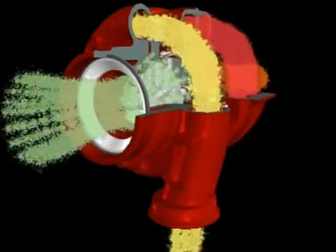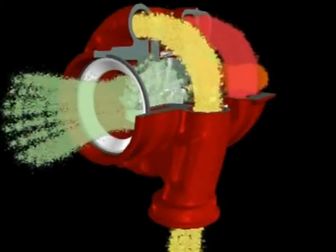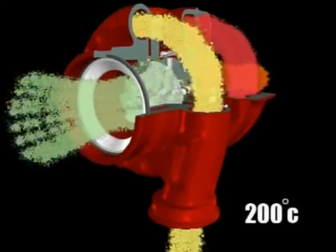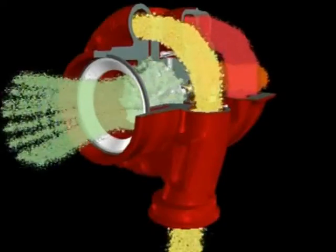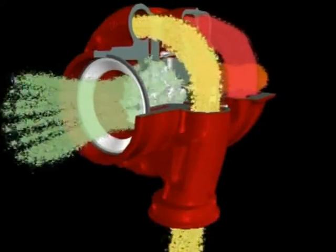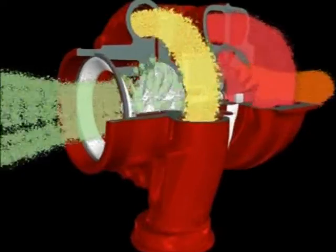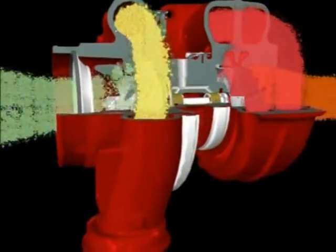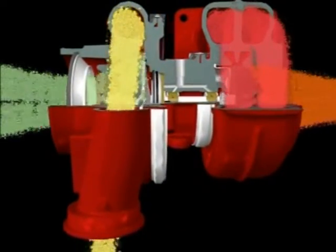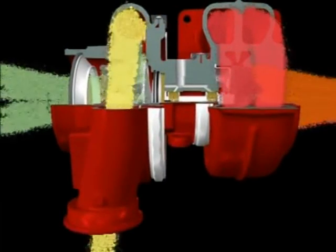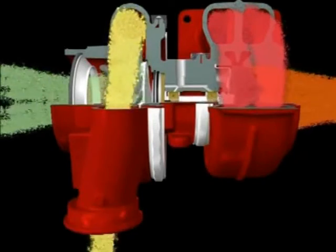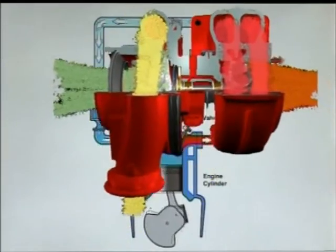Air enters the compressor at atmospheric temperature. However, it leaves the compressor cover at around 200 degrees Celsius. As air temperature increases, its density decreases, thus even more air can be forced into the engine if the air is cooled after the compressor stage. This is called intercooling or aftercooling and is achieved by cooling the air either with water or air.